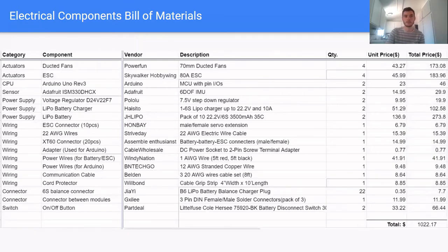Looking at the electrical bill of materials, we have all our components and their prices, and we see the total cost is just over a thousand dollars.